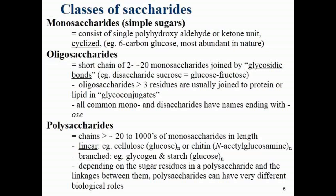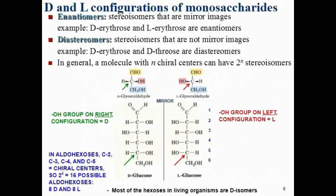Monosaccharides, like amino acids, form stereoisomers. These stereoisomers are based on two different configurations known as D and L, which are enantiomers — non-superimposable mirror images. In D-glyceraldehyde, the OH is written on the right-hand side. For larger sugars like glucose, to determine whether a molecule is the D or L isomer, we look at the chiral center farthest from the functional group.